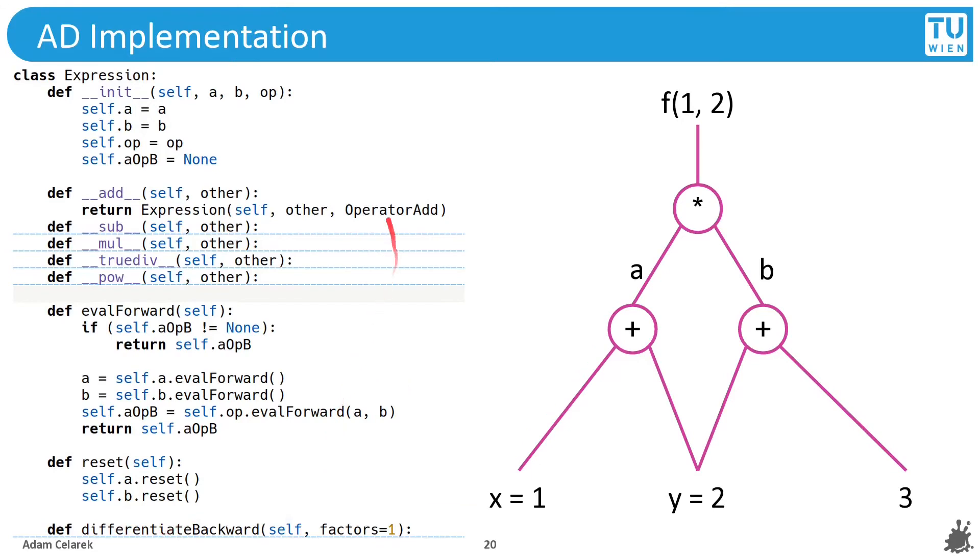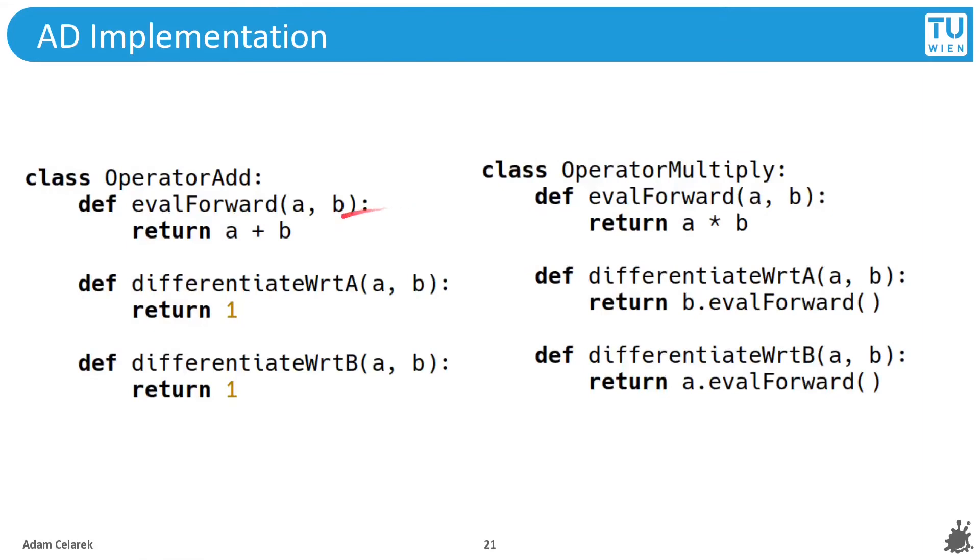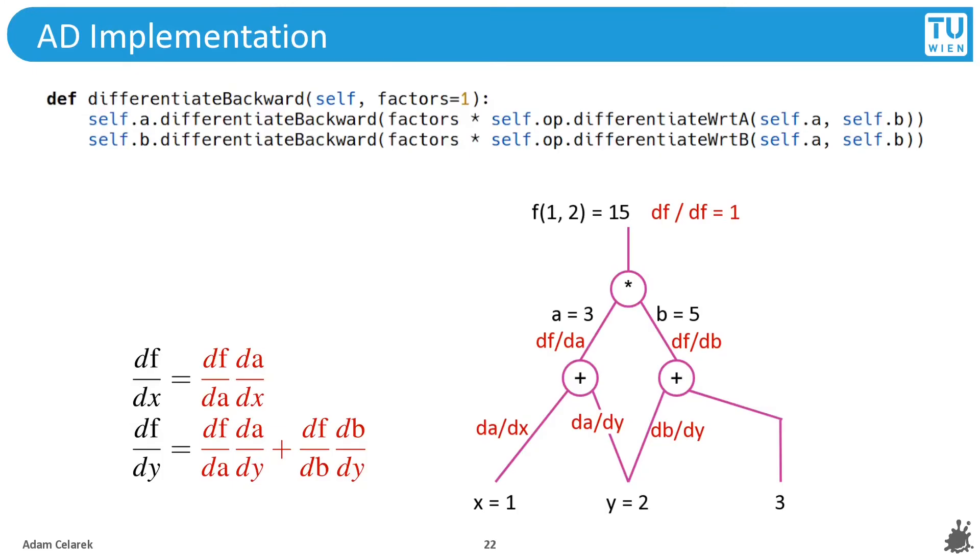Let's first look at those operators. Evaluate forward is pretty straightforward, it just computes the result. Then we have two functions: differentiate with respect to a and differentiate with respect to b. In the case of the sum, it's simply one and one. In the case of the product, it's simply the other variable, and we call evaluate forward here, but this will just return the cached value.